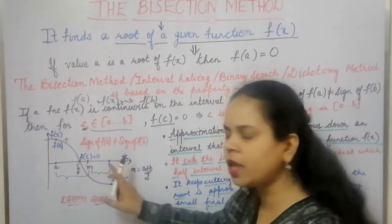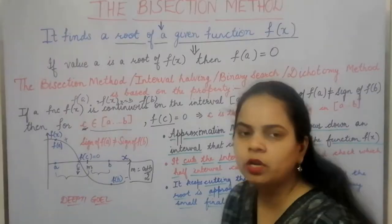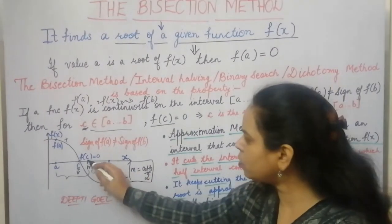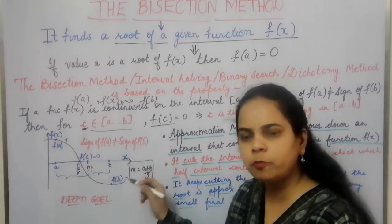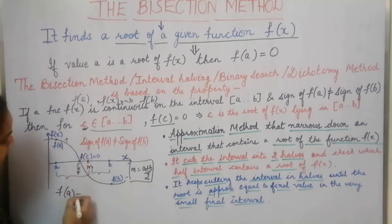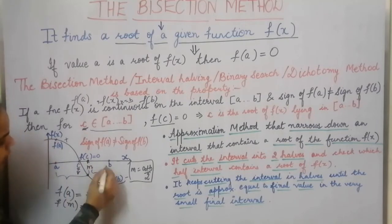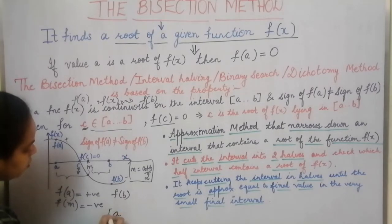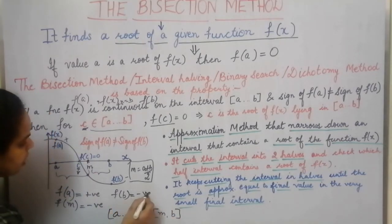Initially we have the interval from a to b. We take a midpoint m equal to (a + b) / 2, then calculate f(a), f(m), and f(b). For this graph, f(a) is positive, f(m) is negative, and f(b) is also negative. We now have two intervals: a to m, and m to b. Since f(m) and f(b) are both negative, they do not have opposite signs.